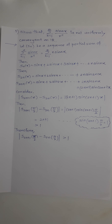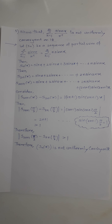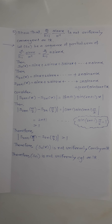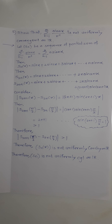When we talk about a Cauchy sequence, we always try to prove it is less than epsilon, but here the difference is always greater than 1. Therefore, Sₙ(x) is not uniformly Cauchy on ℝ. Since it is not uniformly Cauchy, it is not uniformly convergent, and therefore the corresponding series is also not uniformly convergent on ℝ.